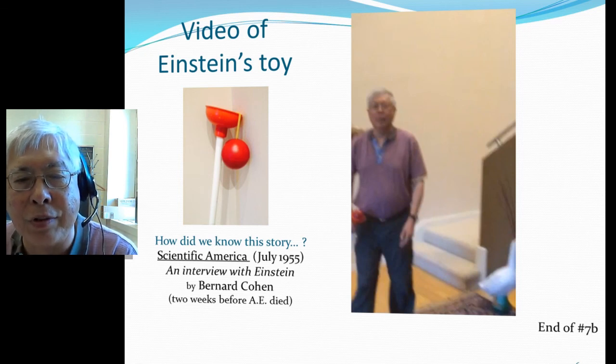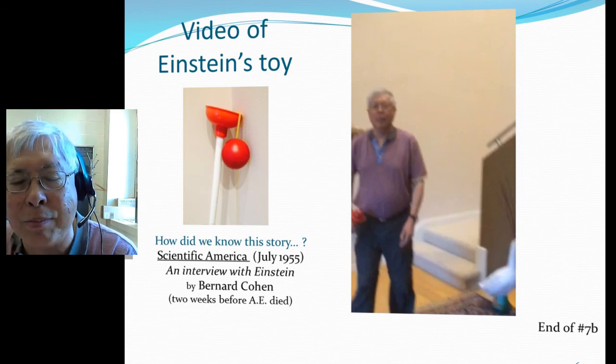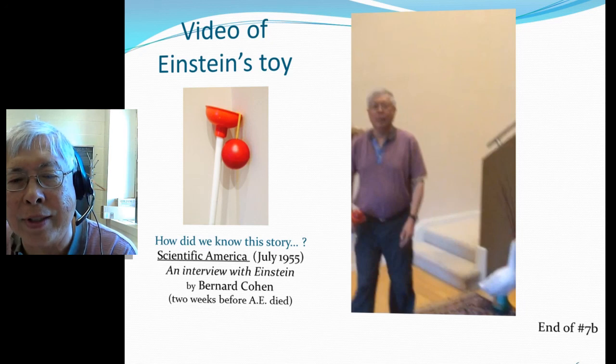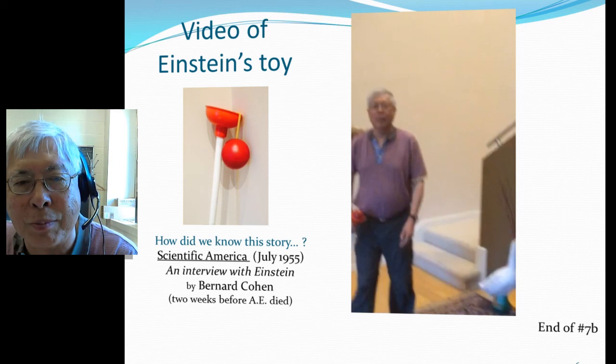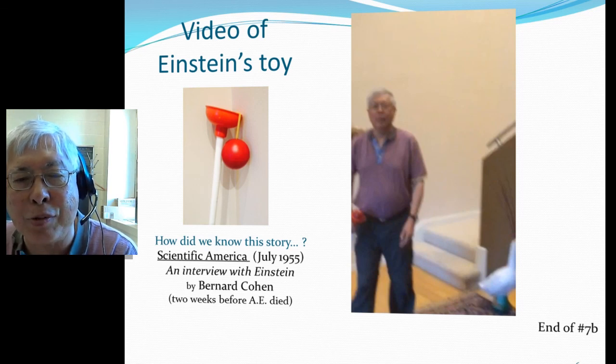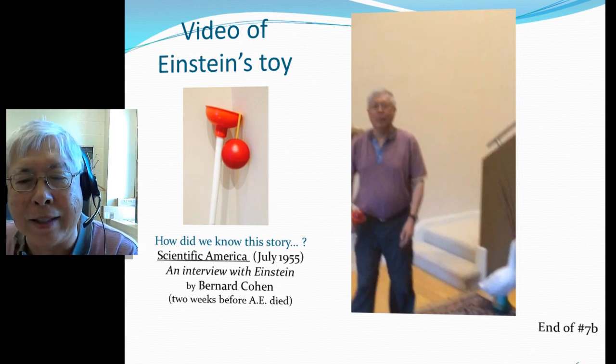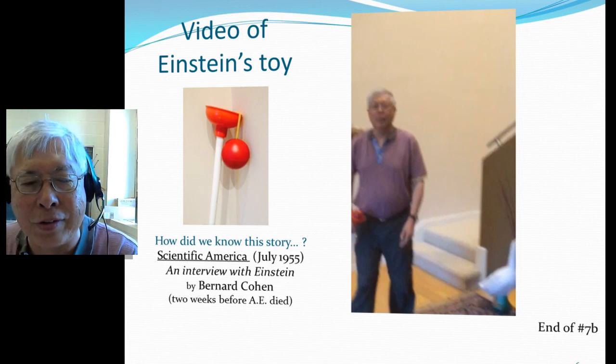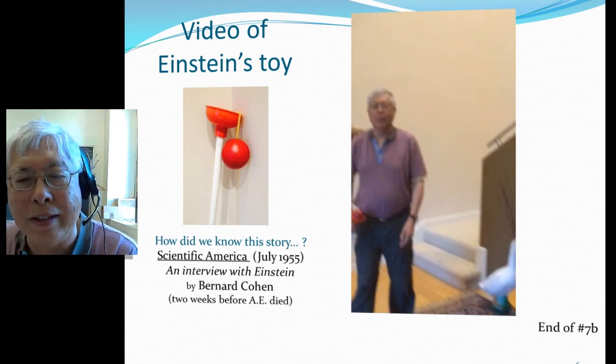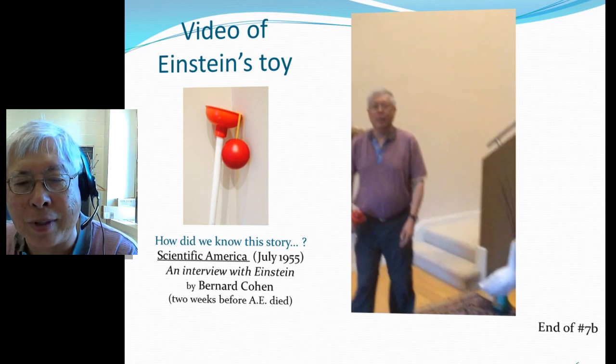In this article he explained that after the interview, about an hour and a half to two hours, he was leaving and then he noticed something in Einstein's study - in fact a curtain rod with a ball with some funny things. And Einstein said, 'Oh, you know, my neighbor gave this as a birthday present and it illustrates the principle of the equivalence principle.' And Einstein was apparently very fond of this toy, as we know about through this Scientific American article.